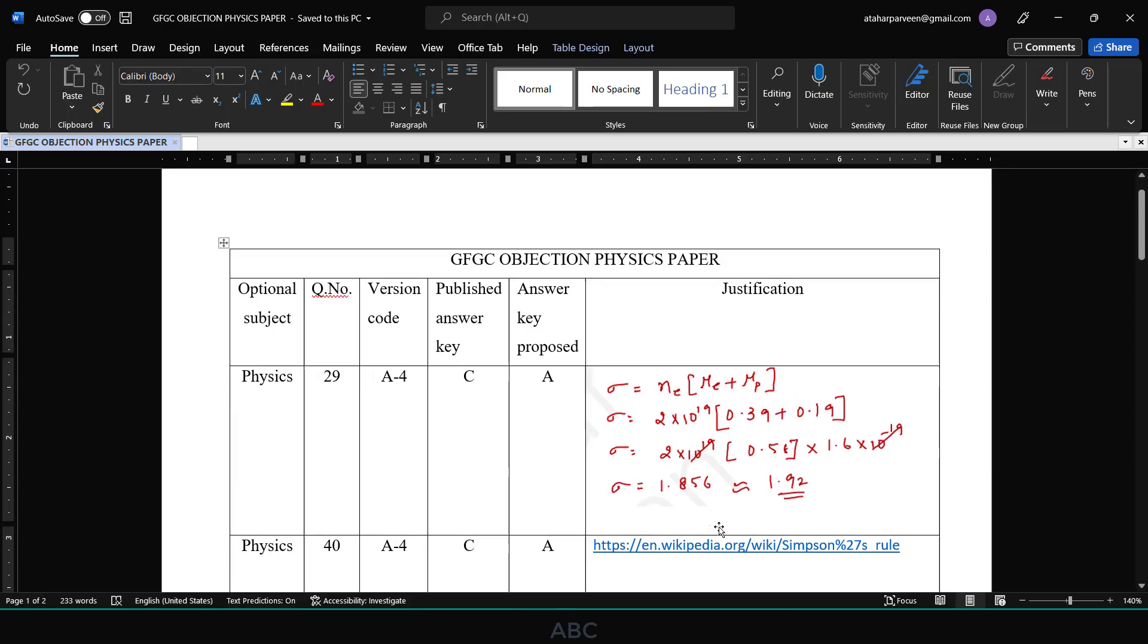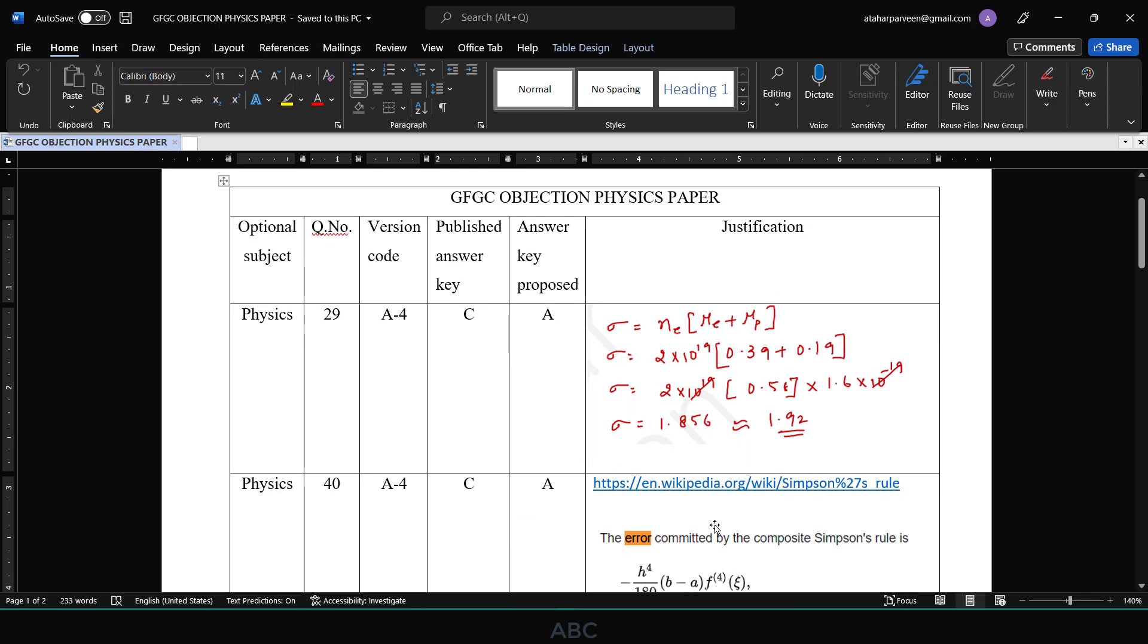These are the objections which I feel, maybe I am wrong somewhere or maybe some more questions are to be added. This is whole and sole my suggestions only. This is the pattern which they have told us to follow. My version code is A4 and this is the published answer key from the provisional answer key. And this is the answer key which I am proposing. I have made this objection list along with the justification.